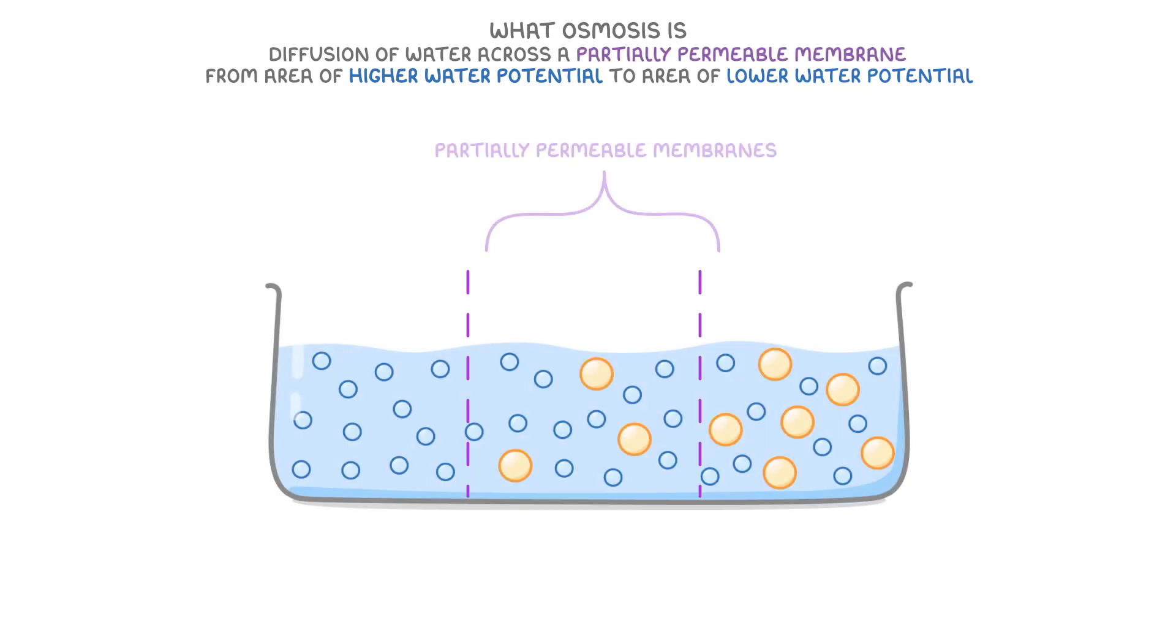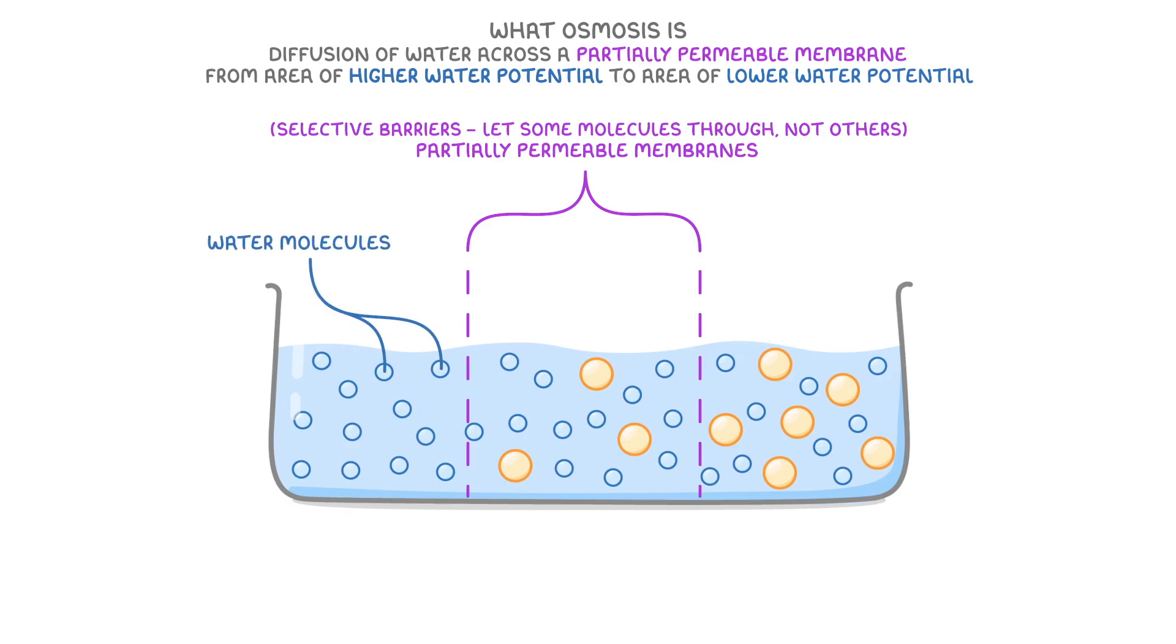If we look at this diagram, we can see some partially permeable membranes, which are selective barriers that let some molecules through but not others. And in this case, these water molecules are small enough to pass through the membranes, but the solute molecules are too large to pass through. Let's say we've got the same water potentials as we did for our beakers last time, but this time they're all in this one container, just separated by the partially permeable membranes.